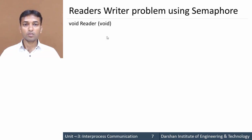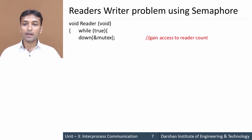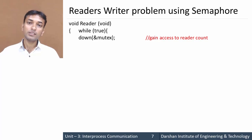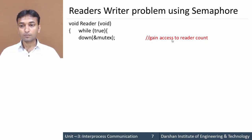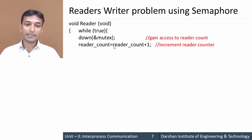Then void reader(void) — this function is called by a process whenever it wants to access the database in reading mode. While true: the process wants to read data from the database. Then down(mutex) — the process is gaining access to reader_count, because once this process starts accessing the database in reading mode, the number of reading processes must be increased by one. Then reader_count = reader_count + 1 — we increment reader_count.